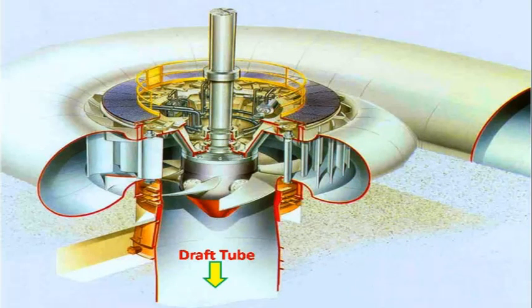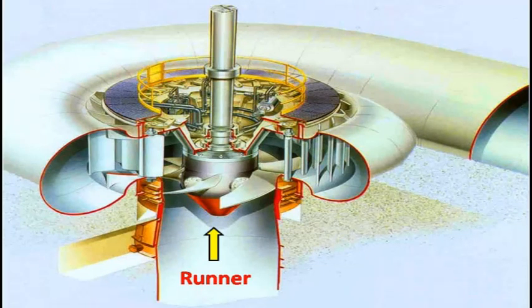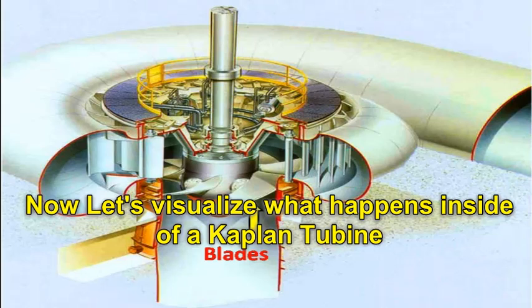Also inside of a generating unit there are draft tube, shrouds, vertical shaft, rotor and stator. Now let's visualize a small 3D animation of how hydropower unit acts.